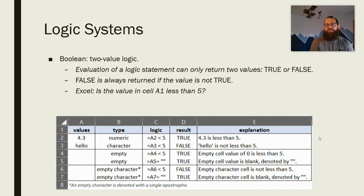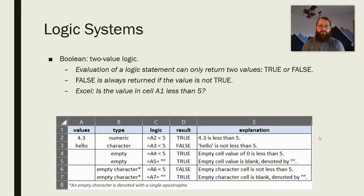To talk about logic systems and why SQL's null is different — it's really a difference between a two-value logic system, or Boolean logic, and a three-value logic system, which is what SQL uses. In a Boolean two-value logic system, an evaluation of a logic statement can only return two values — a statement is either true or it's false. False is always returned if the value is not true.